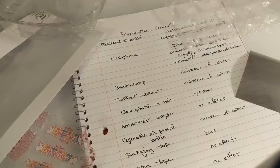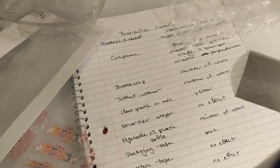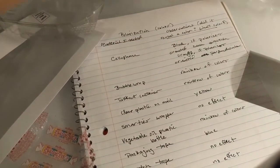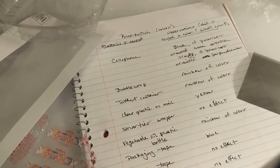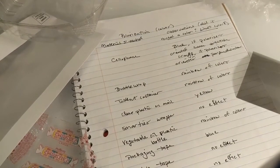Just like before, you should write down a list of the materials you tested, and then your observations. Did it reveal a color? What color did it reveal? Or did it just have no effect? The best materials that work for this are clear, plastic-like materials.